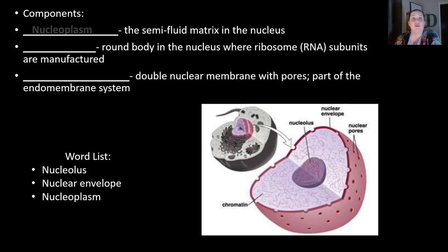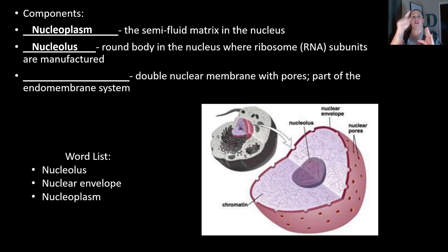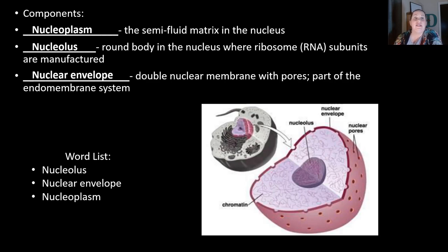Other components of the nucleus include the nucleoplasm — the semi-fluid matrix found inside the nucleus. We also have the nucleolus, a round body in the nucleus where ribosomes, which are made of RNA, are manufactured. If you look at a picture of the nucleus, it reminds you of a jawbreaker with that dense ball in the middle — that's the nucleolus. The outer covering of the nucleus is known as the nuclear envelope. This is a double layer with tiny little pores in it. Those pores allow for movement of things in and out of the nucleus, allowing only super small structures to pass through. The nuclear envelope is part of the endomembrane system, which is why the rough and smooth ER is normally attached to this structure.